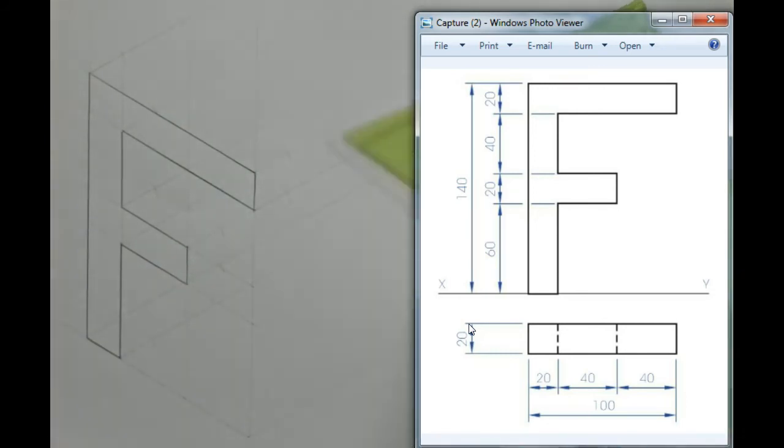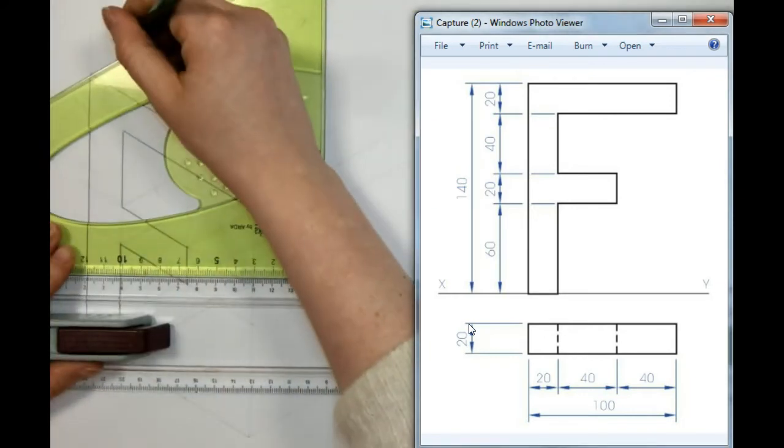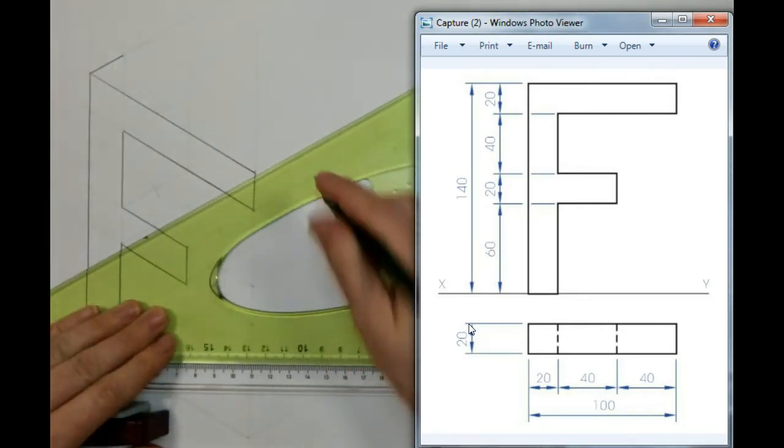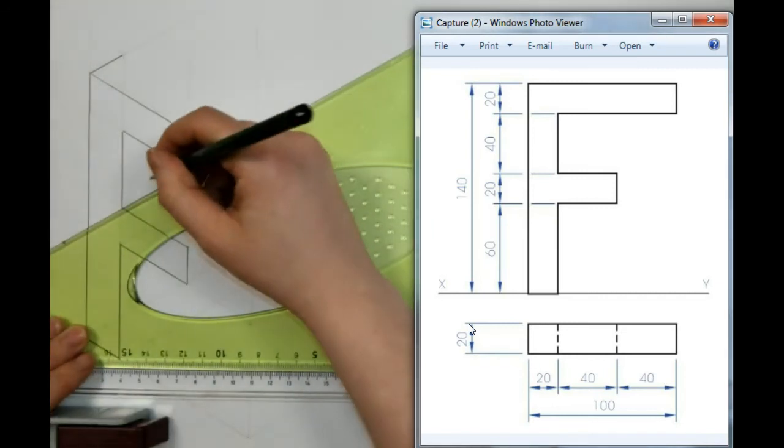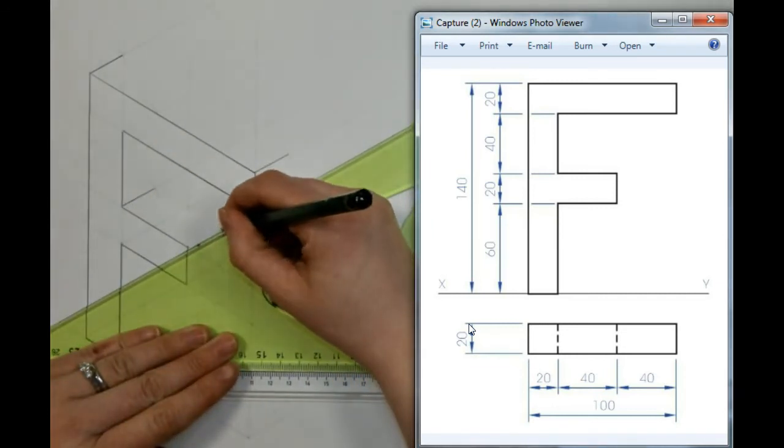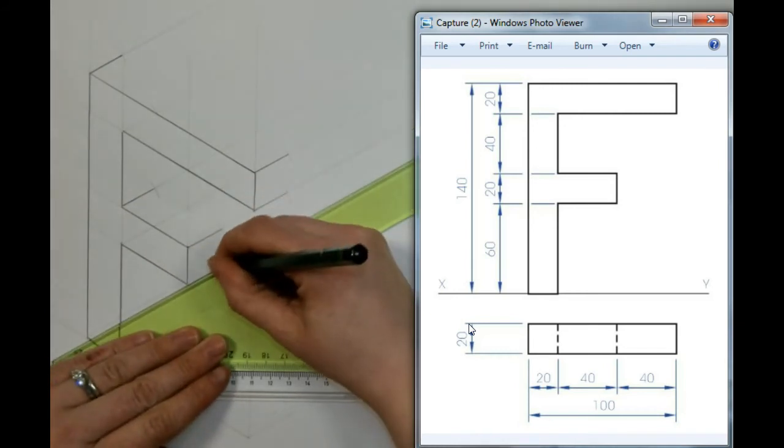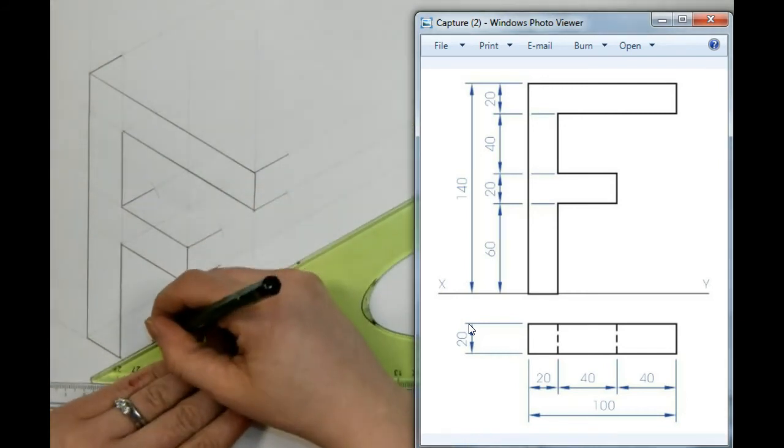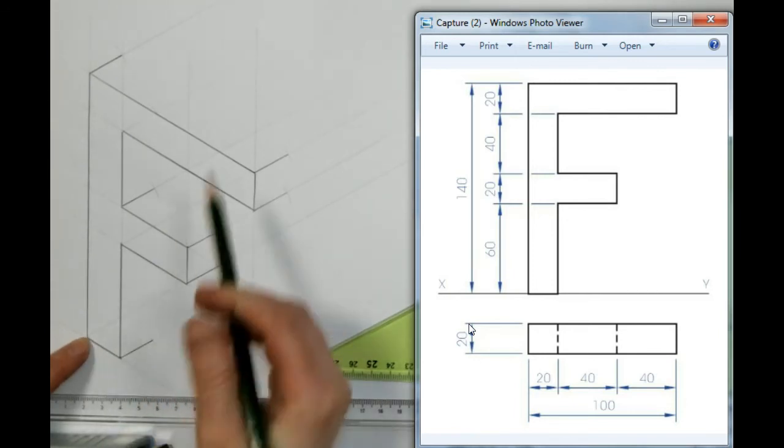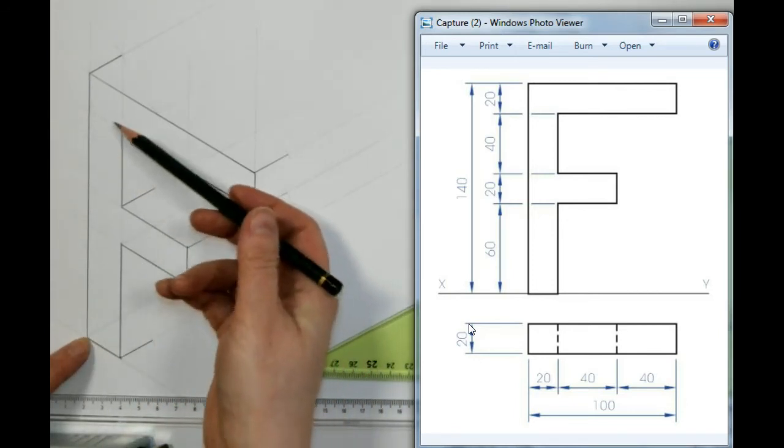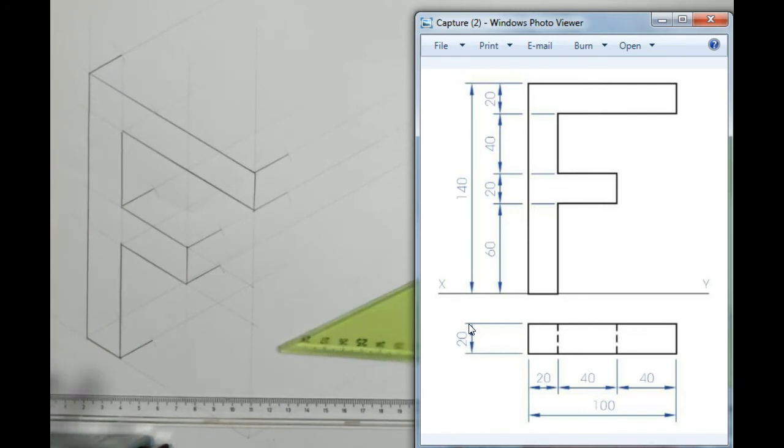Using my 30-degree set square, I can start darkening these in. I will not see this line or this line because they're being obstructed by the rest of the body, so I don't darken them out.